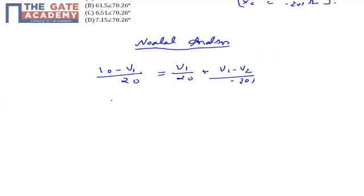Now if I can simplify this, 10 will be equal to (2 plus J) times V1 minus 2J plus J times V2, equation number 1.